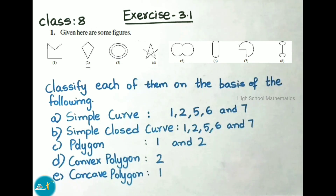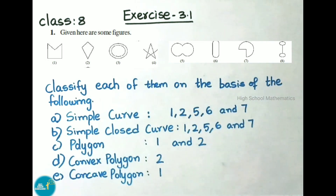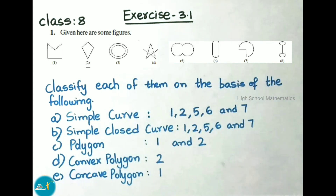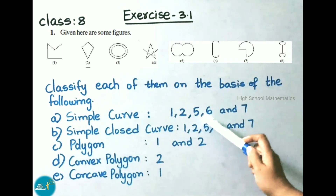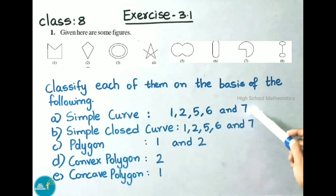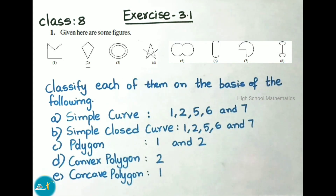Question number 1: observe the given figures. We have to classify each of them on the basis of the following. First, simple curves. If you observe the given figures, figures 1, 2, 5, 6, and 7 are having simple curves.